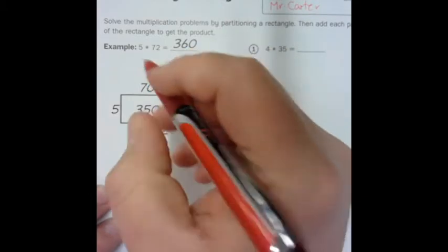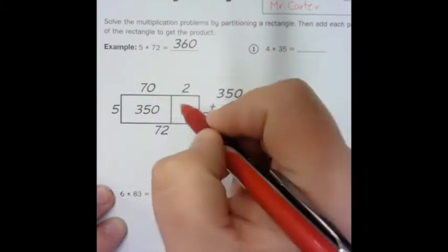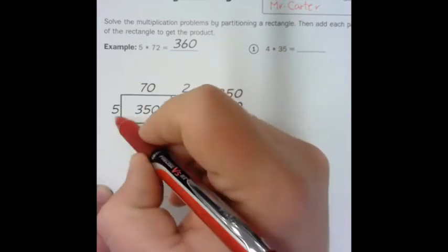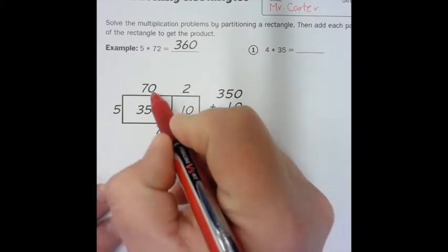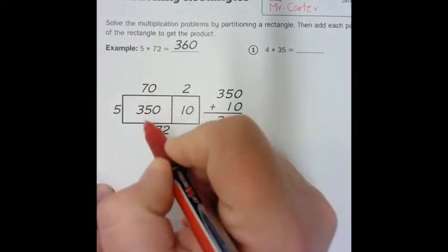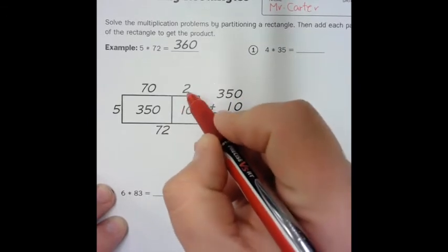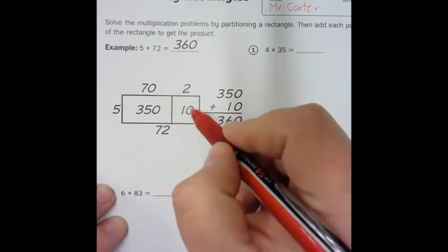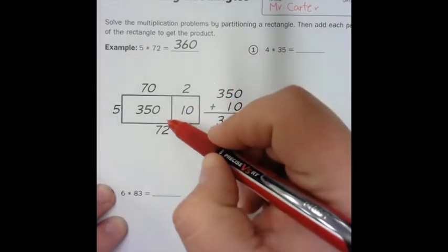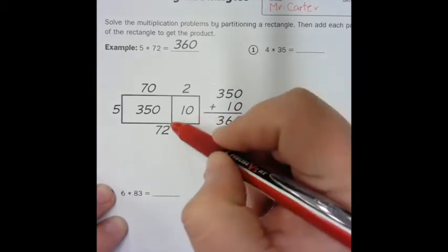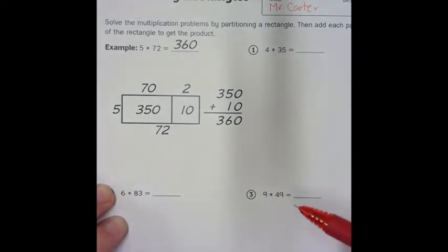Then what you do is you just work out each multiplication fact here in each box. So 70 times 5, that's an extended fact, so you go 7 times 5 is 35 and you add your 0 in for 350. Then you have your second box over here, you go 2 times 5 is 10. So then what you do on the side over here is you take your boxes and you add them together. So you have 350 plus 10 for an answer of 360.